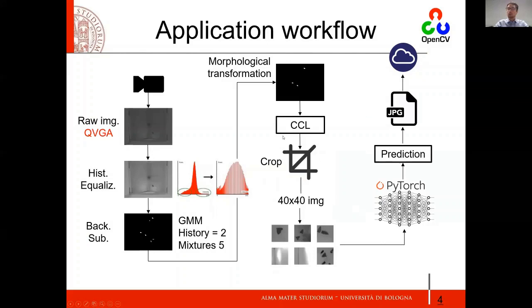What about the application workflow? We have our smart camera. We take a raw image picture. We apply histogram equalization using the OpenCV library, which is a common library for image processing. We apply background subtraction, which is basically a Gaussian Mixture Model with a history of two and five mixtures. We then apply a morphological transformation.